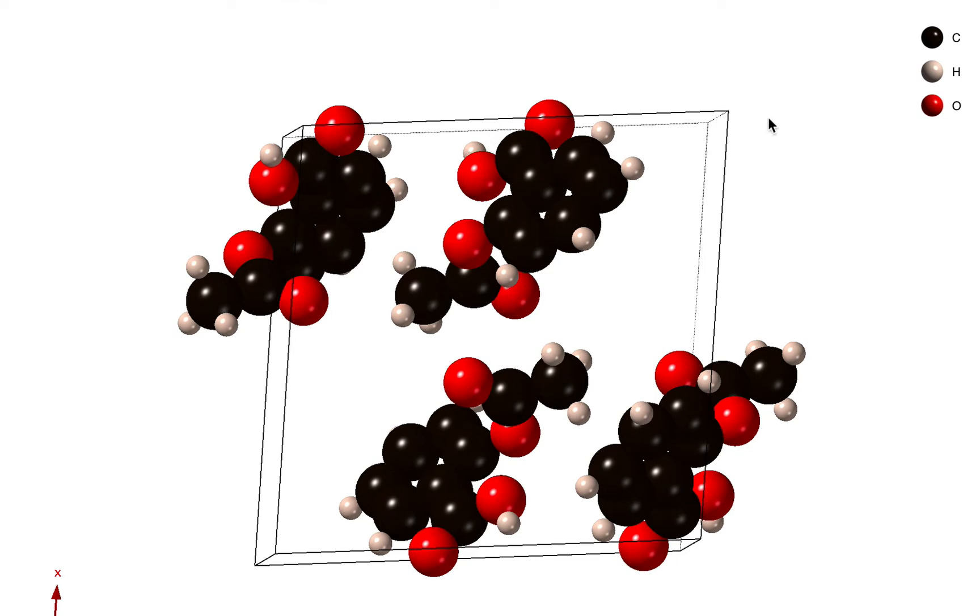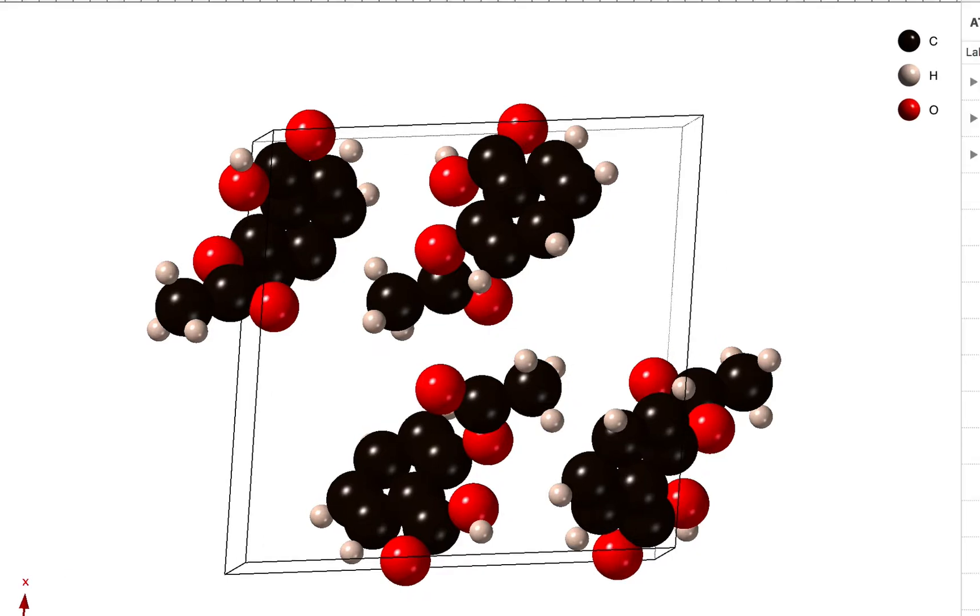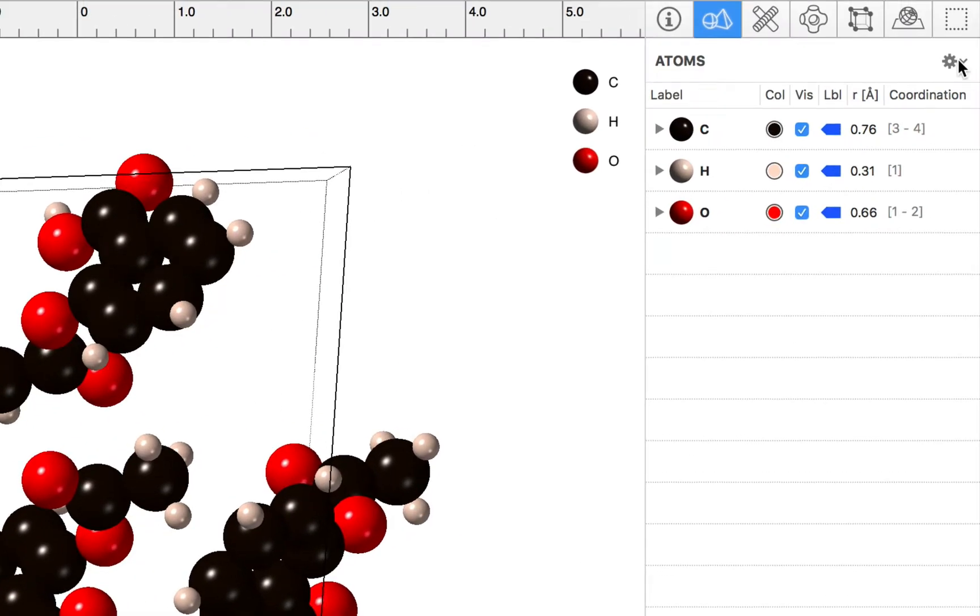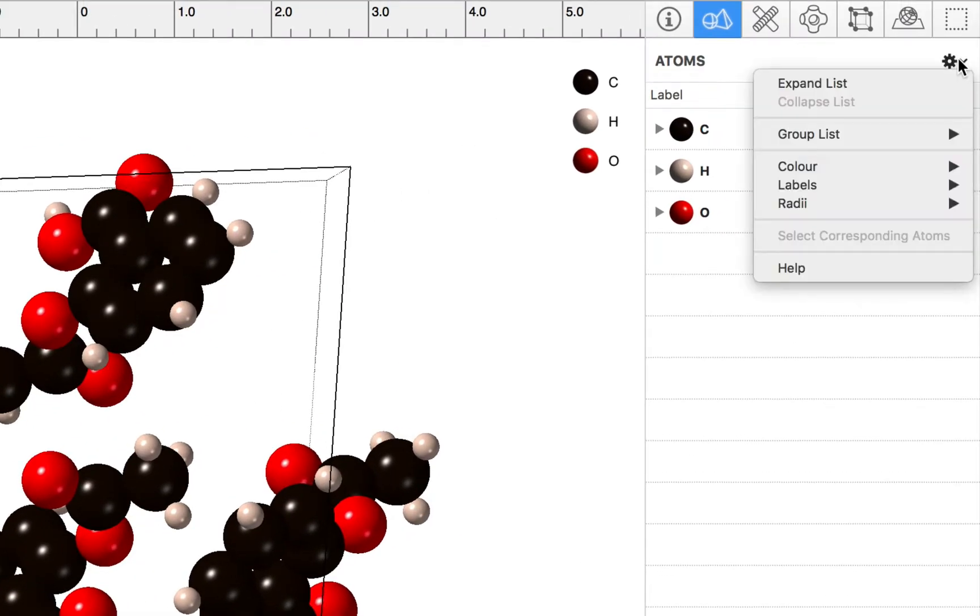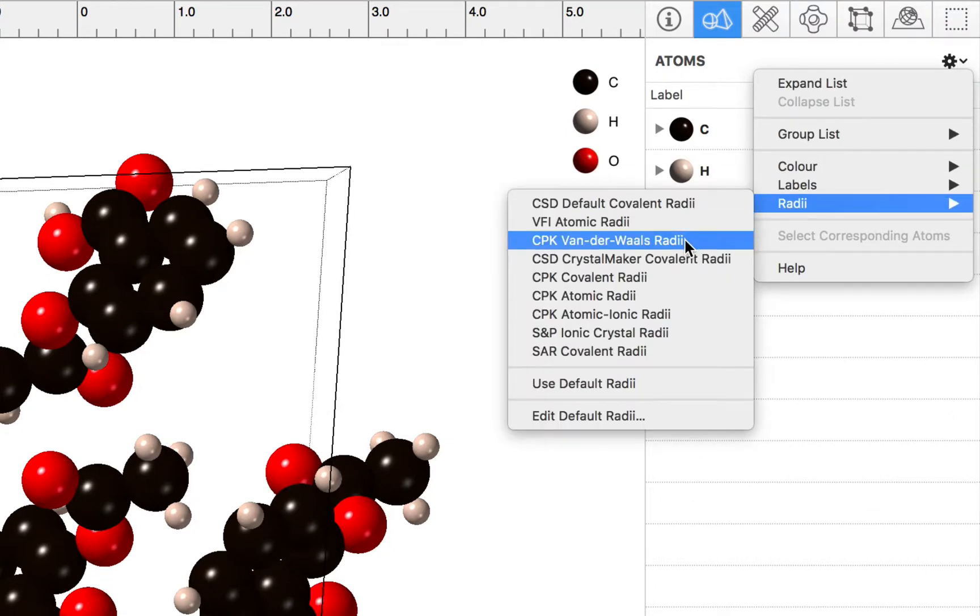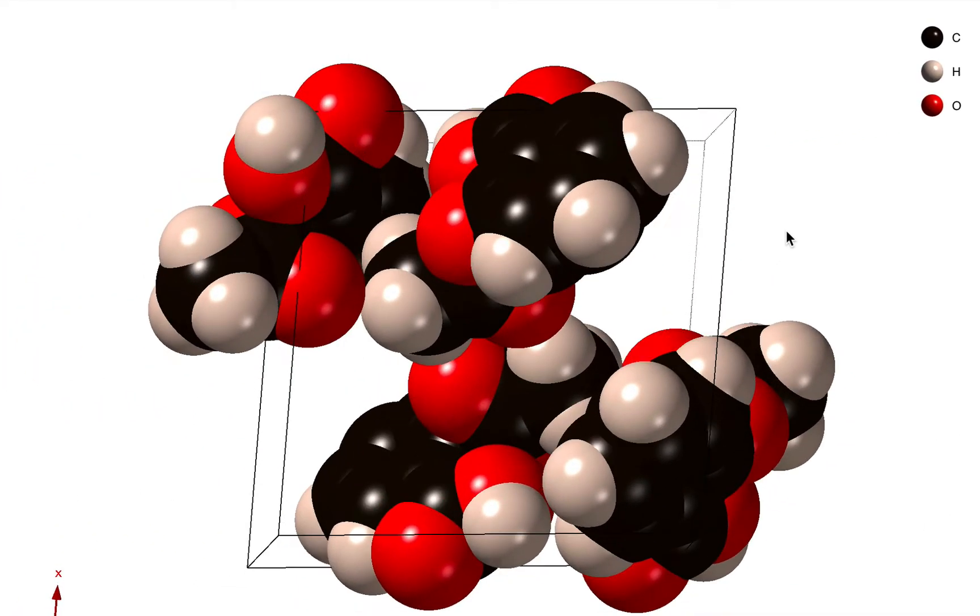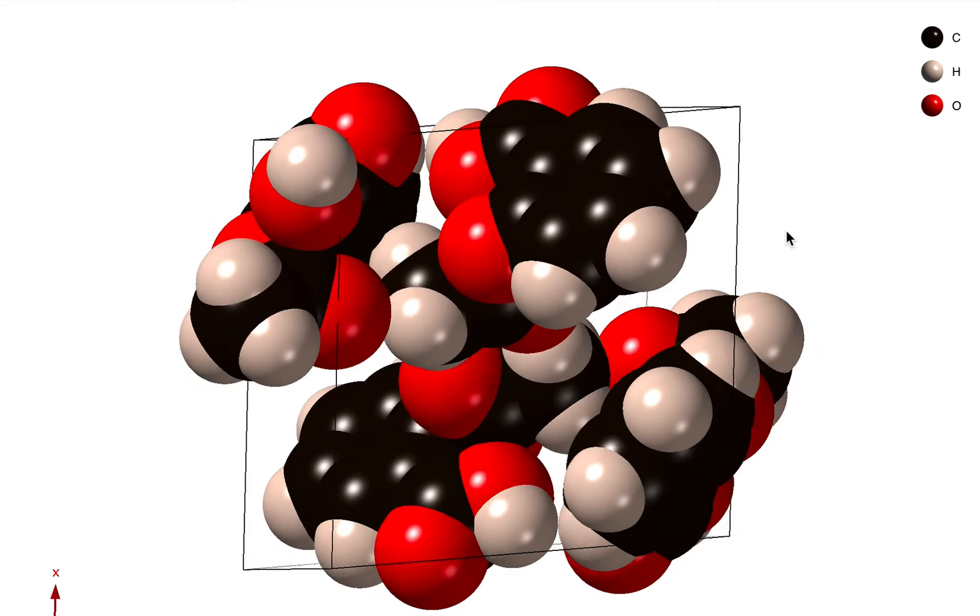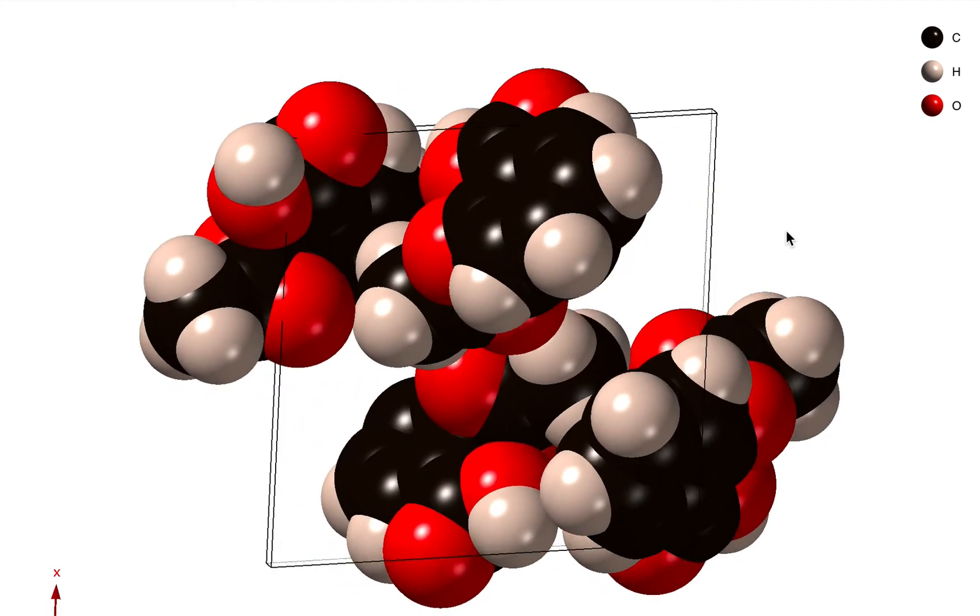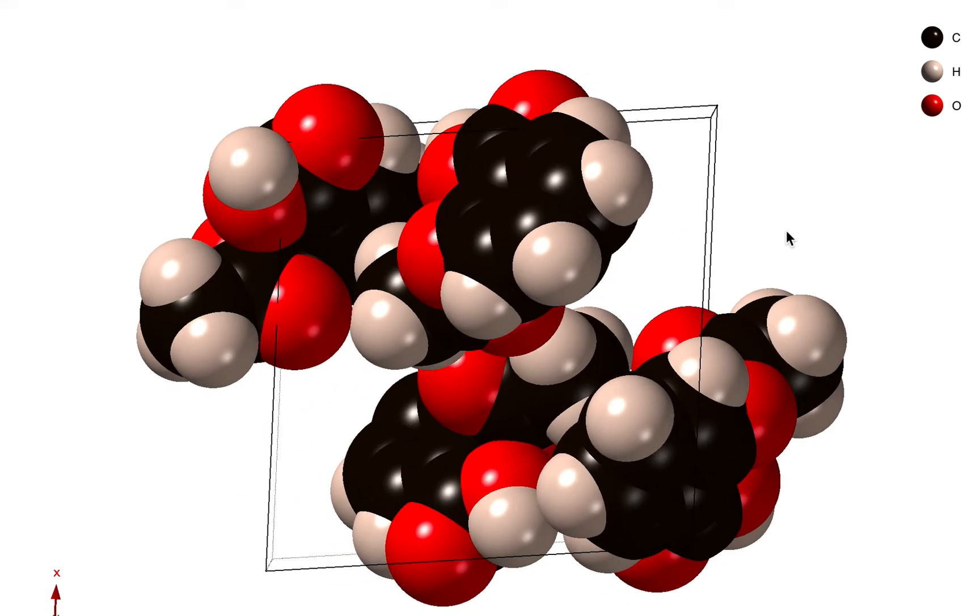You might want to show some van der Waals radii. We can do that by going to this actions menu and we can choose radii van der Waals, and now we can see the sort of interaction volumes of the molecules. Now the problem with this view is that it's so dense you can't really see what's going on.